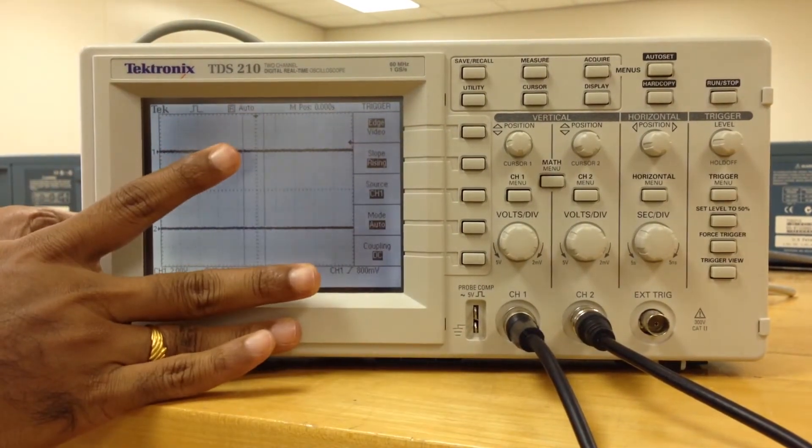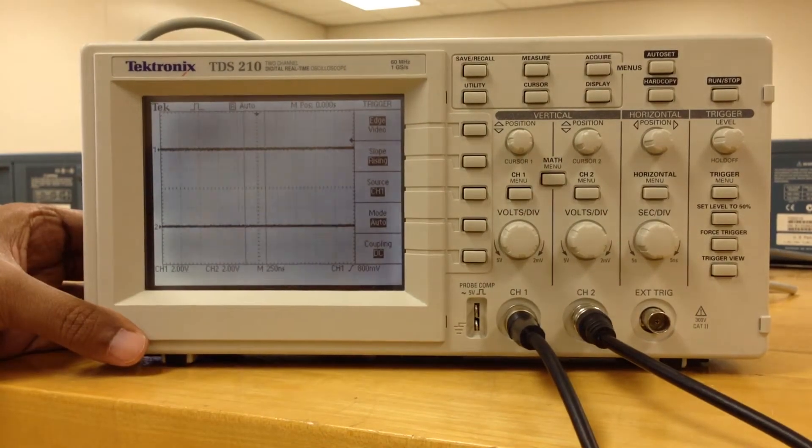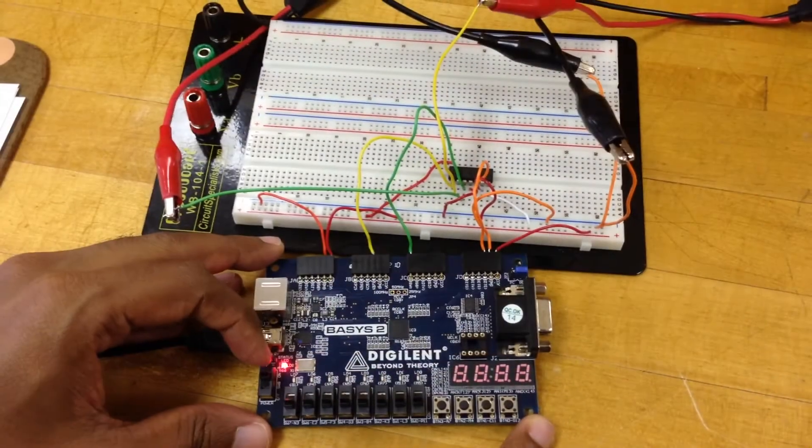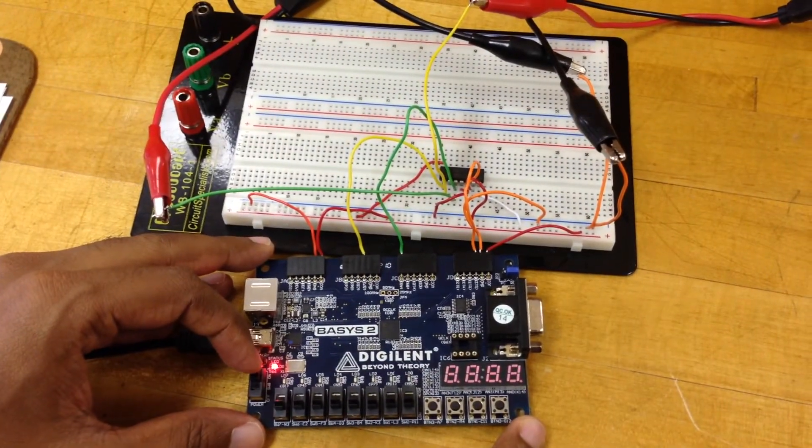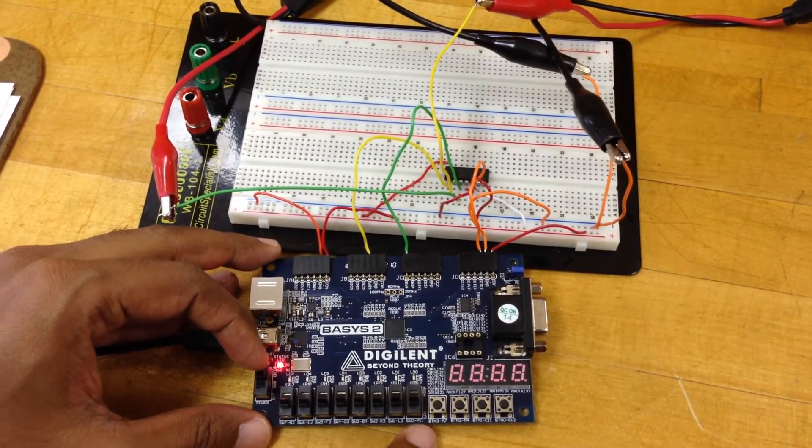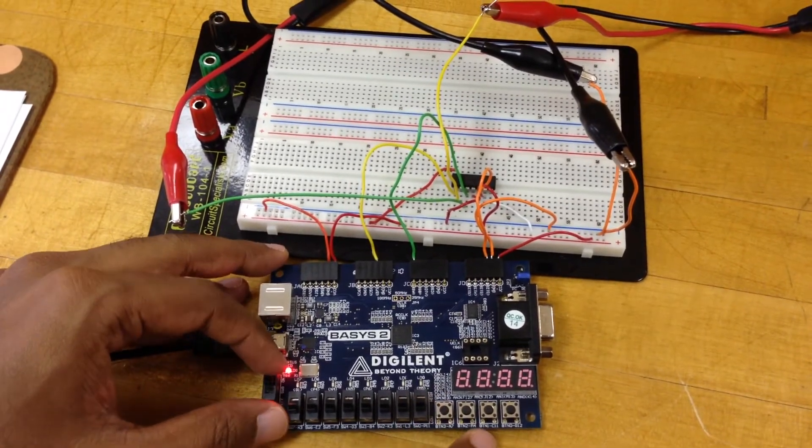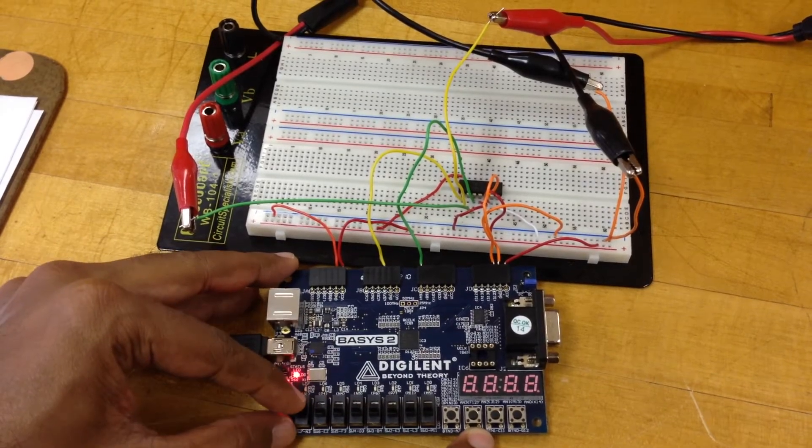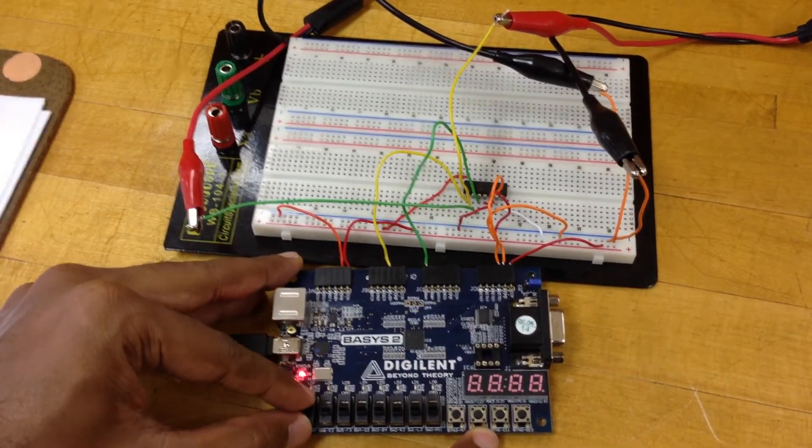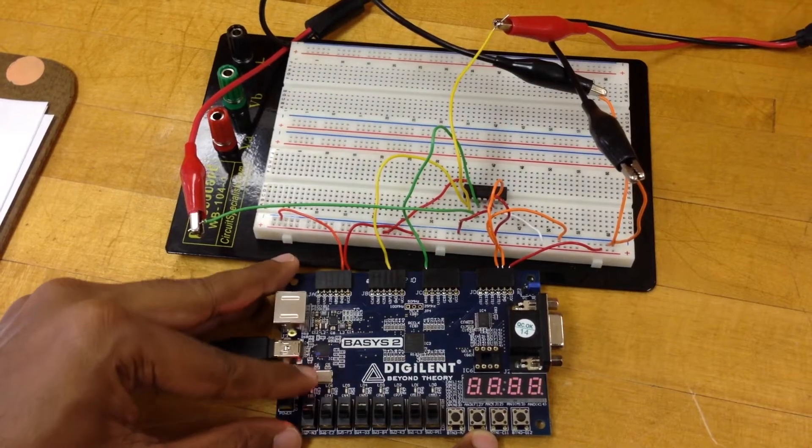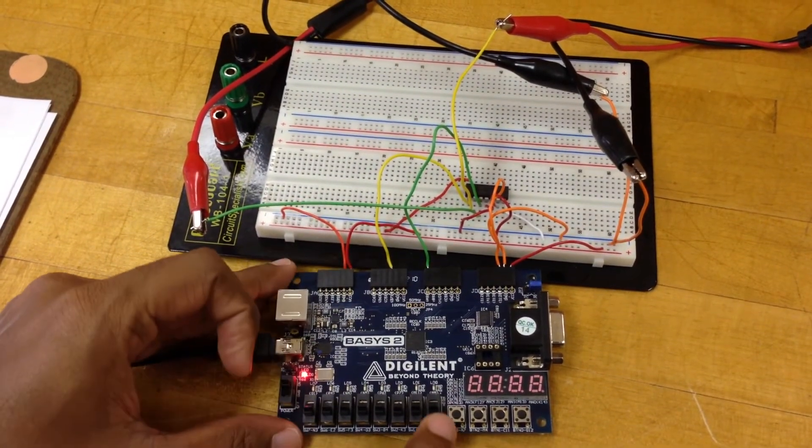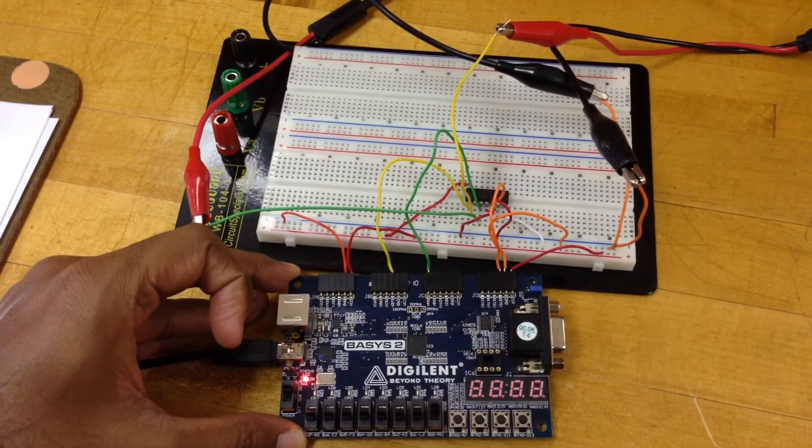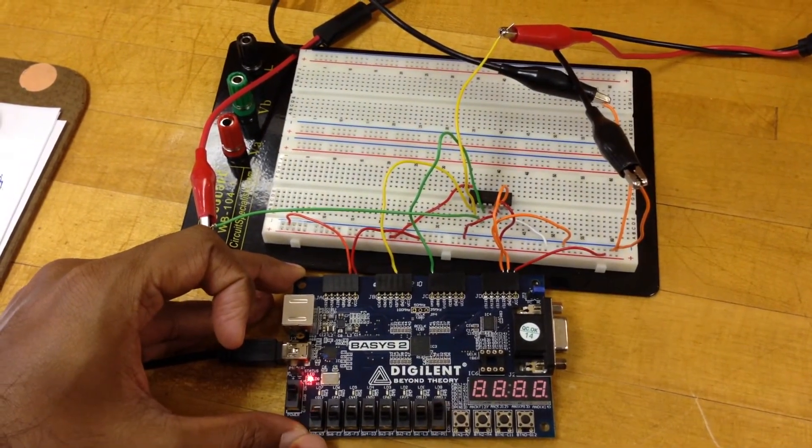Once this is done, we are going to do something on the breadboard. Make sure switch 0 is turned off and switch 7 is turned off. I'll move switch 7 up and down a few times and then set it off, and then put switch 0 up. Now you can see switch 0 is up and switch 7 is down.